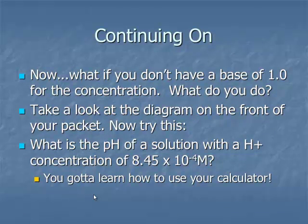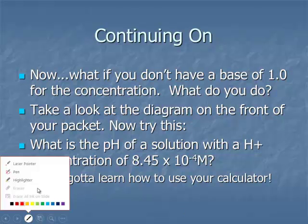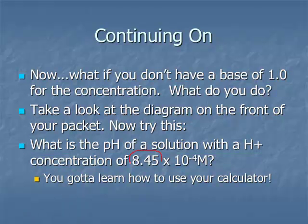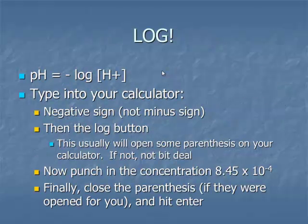What if you don't have a base of 1.0 for the concentration? Let's try something more complicated with serious math. What is the pH of a solution with an H+ concentration of 8.45 × 10^-4? This number is not 1.0, so if you thought the pH is 4, you're close, but you'd be wrong. You need to learn how to use your calculator.